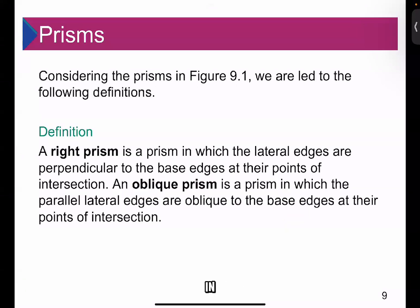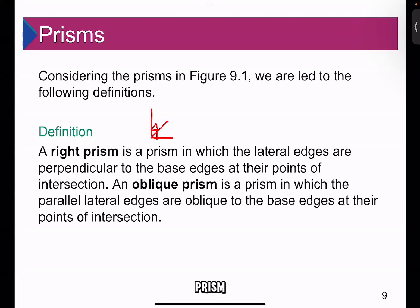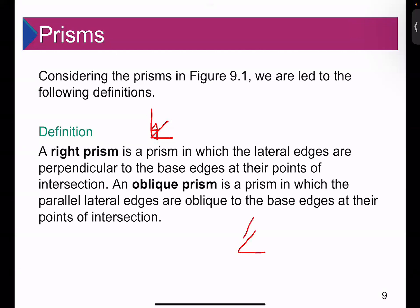Considering the prism in figure 9.1, we are led to the following definitions. A right prism is a prism in which the lateral edges are perpendicular to the base edges at their points of intersection — it forms right angles. An oblique prism is a prism in which the lateral edges are oblique to the base edges at their point of intersection, so it is not forming a right angle.